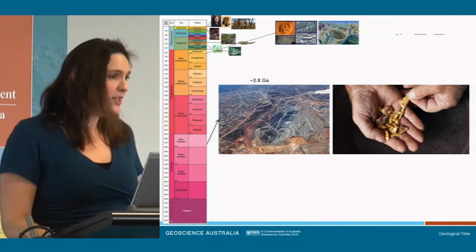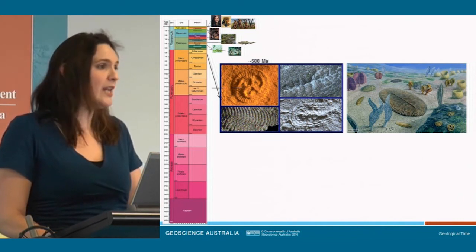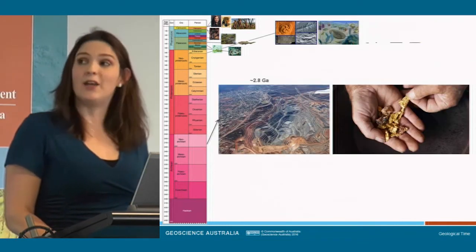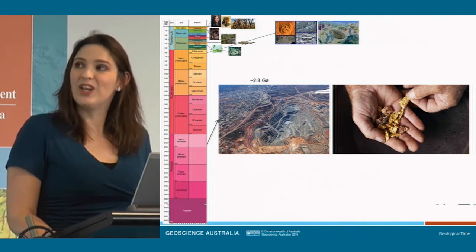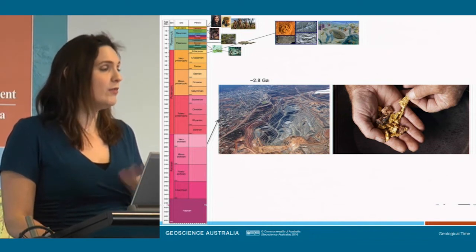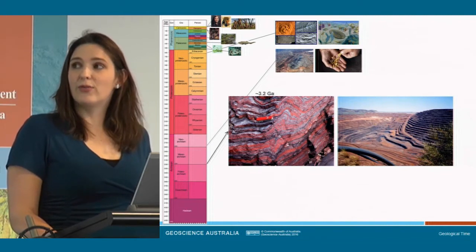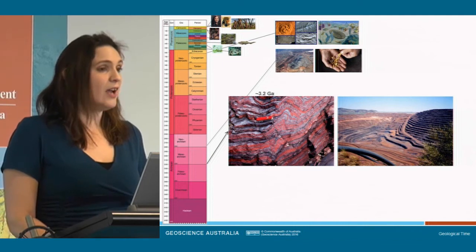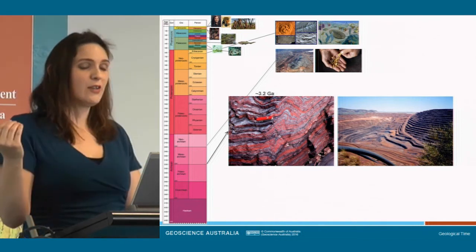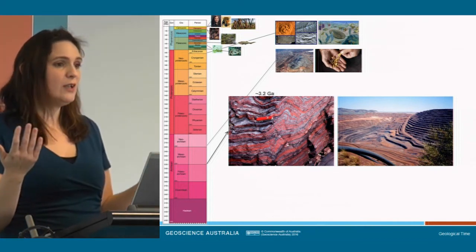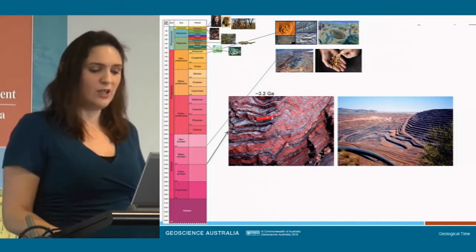A big jump now to 2.8 billion years ago — that's GA, for giga annum. That's when we had gold mineralisation at Kalgoorlie in Western Australia, a major source of Australia's mining wealth. Around 3.2 billion years ago we have some of the earlier banded iron formations — an iron ore resource, also a source of Australia's wealth. These formed where iron in ocean sediments combined with increasing atmospheric oxygen to form iron oxides deposited on the ocean floor.